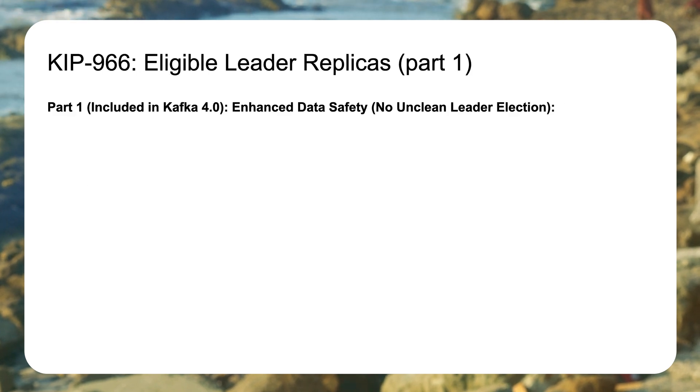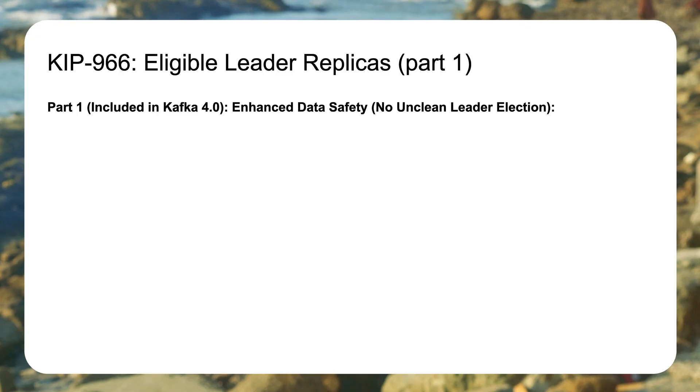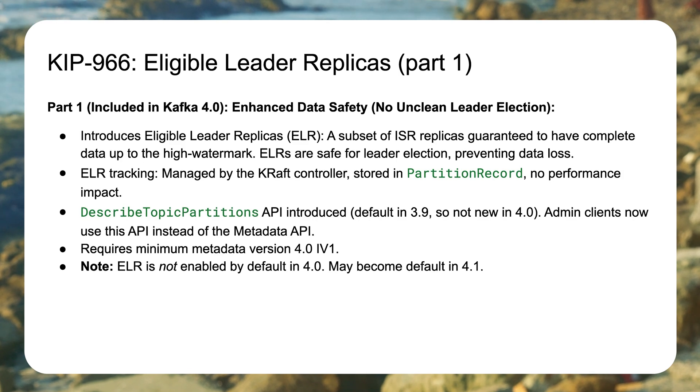KIP 966 protects against a narrow circumstance in which data could be lost. If you had a single in-sync replica that was the leader, had written data to disk, the OS says everything is fine — but it's still in the page cache before it's actually written to storage — and then the broker goes down, you've got a situation where data could be lost. KIP 966 introduces a new set called eligible leader replicas that are guaranteed to have data up to the high watermark, protecting against this scenario.